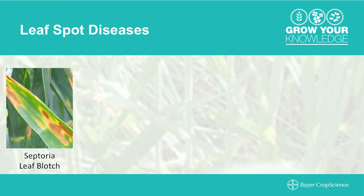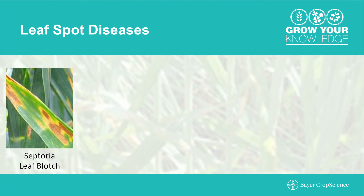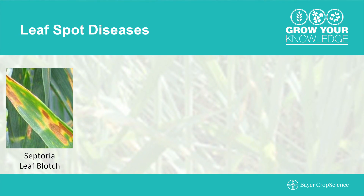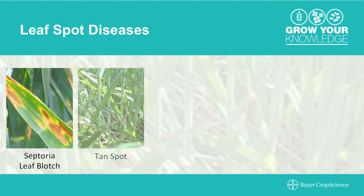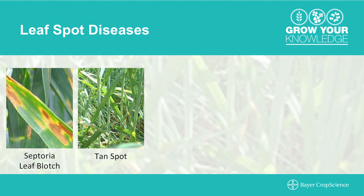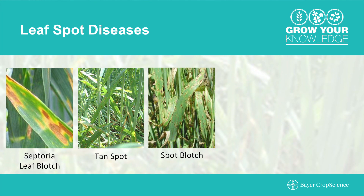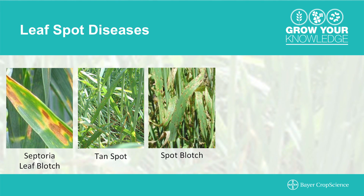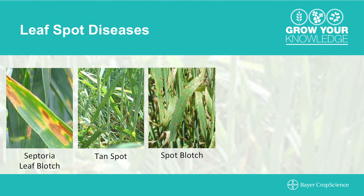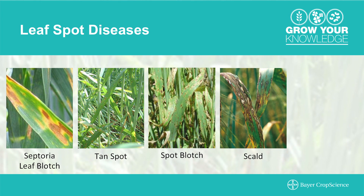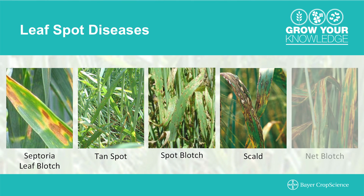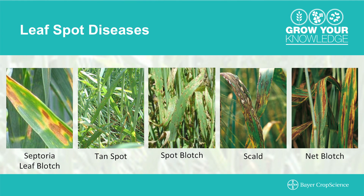The major leaf spot diseases that we deal with in Western Canada are the Septoria leaf blotch complex, which can infect wheat, barley, and oat; tan spot, which is a wheat-specific disease; spot blotch, which can infect both barley and wheat but is primarily found on barley; scald, which is a barley-specific disease; and net blotch, which is also a barley-specific disease.